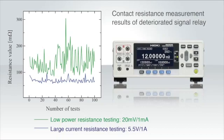You can also clearly see the instability as a result of the deterioration of the contact. When measuring a signal contact using a large current or high voltage, the oxide film on the contact can be damaged, temporarily causing the resistance to be small and resulting in a false measurement result.